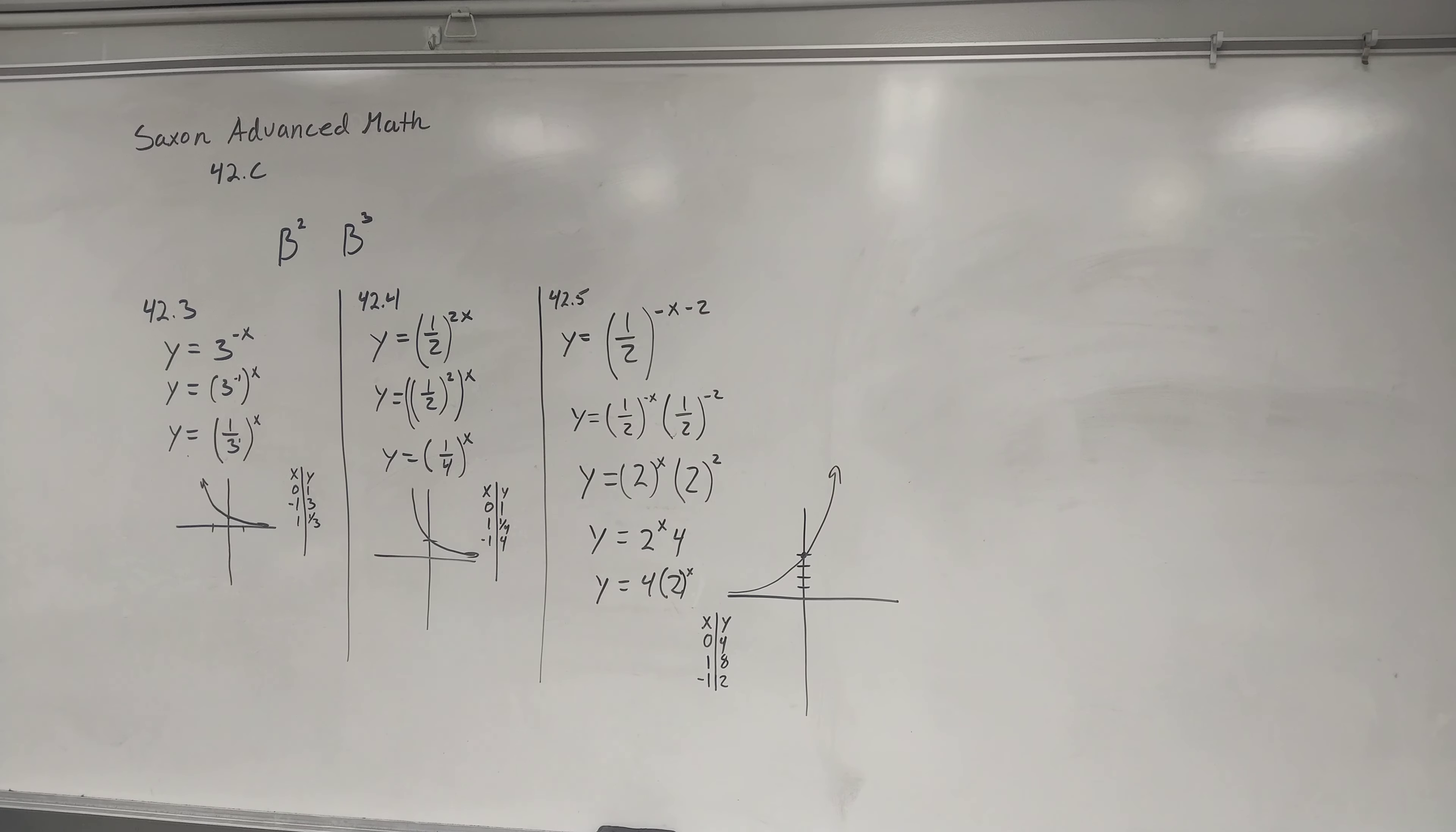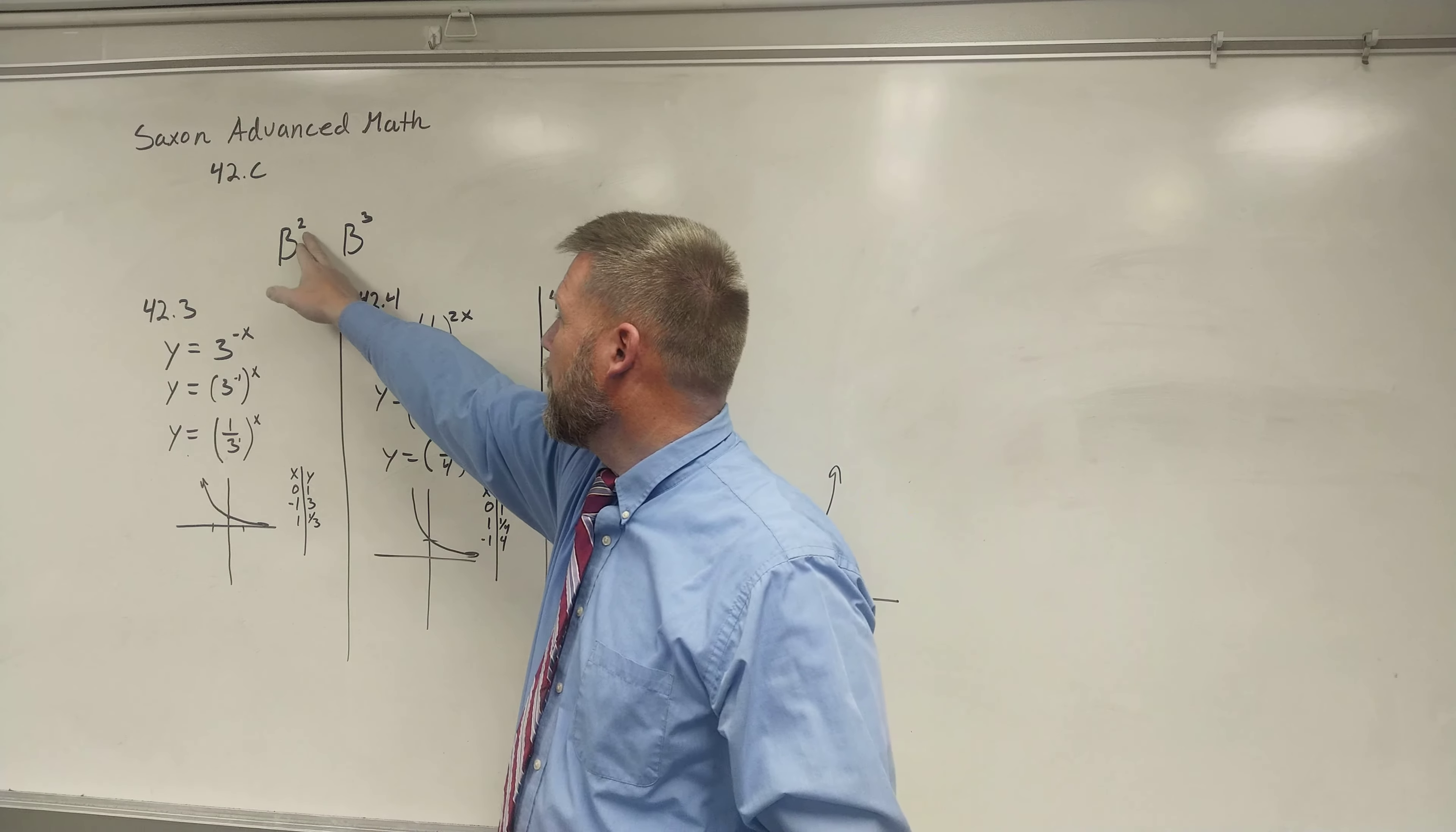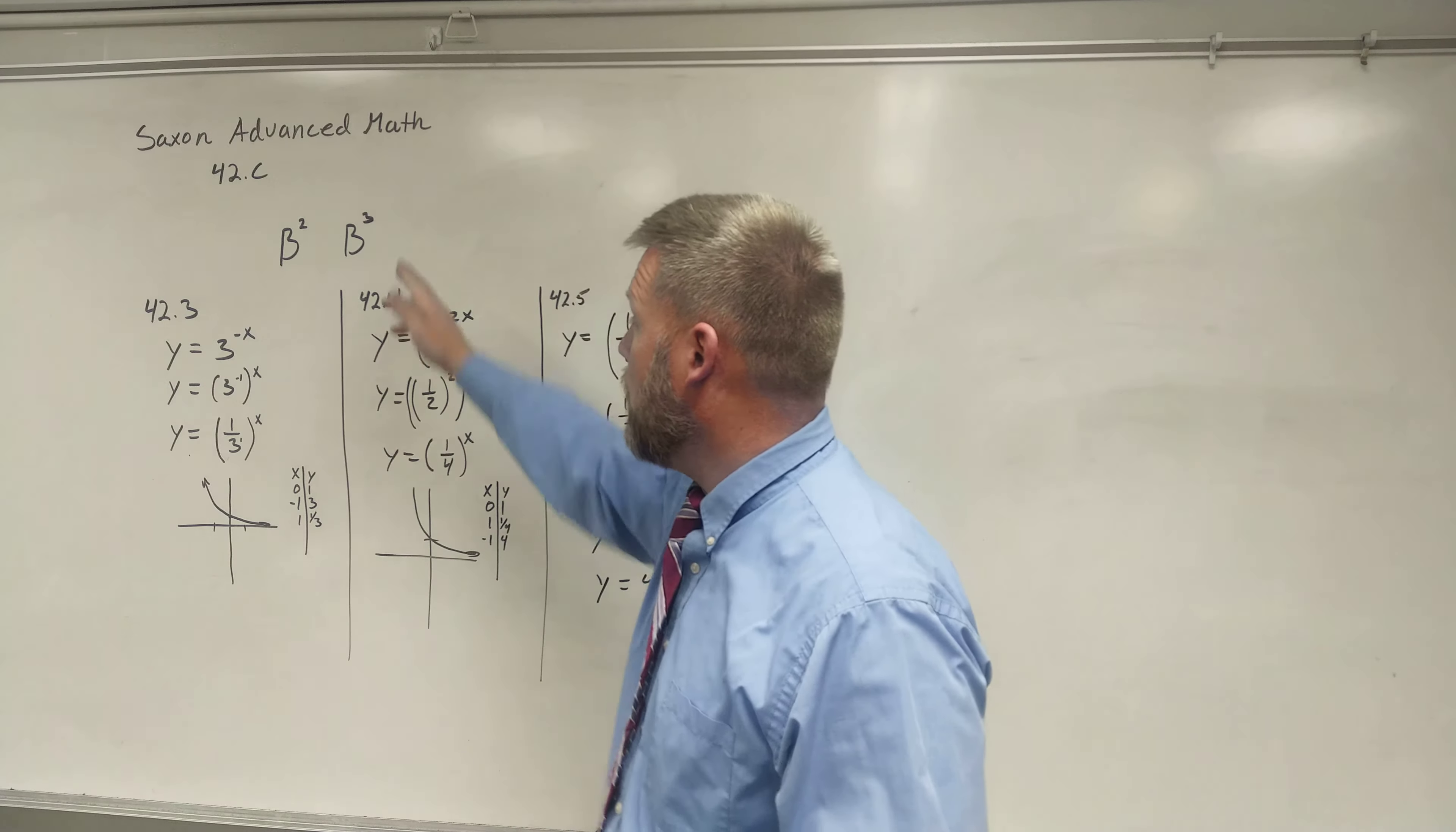Saxon 42C is dealing with constants and exponential functions. What I want to look at first of all is what a power is. When we're looking at it like this, b squared, b cubed, the power of b is 2, the power of b is 3.